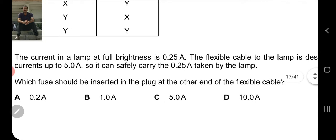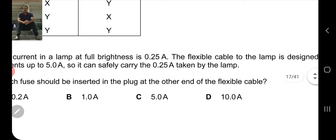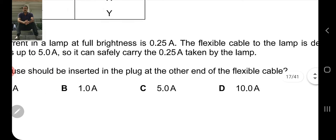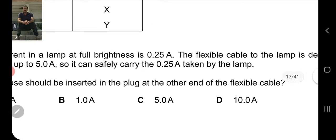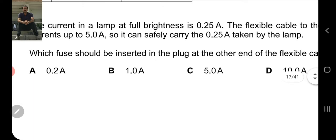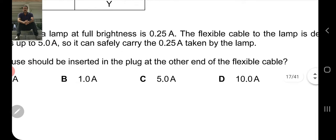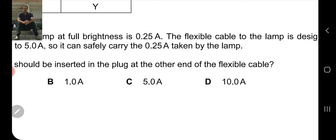The current in the lamp at full brightness is 0.25 ampere. The flexible cable to the lamp is designed for current up to 5 ampere, so it can safely carry the 0.25 ampere taken by the lamp.